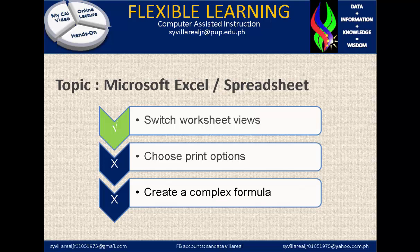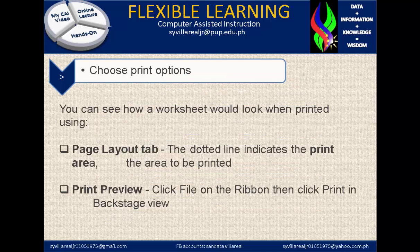Let's go now to our second topic, the Choose Print Option. In choosing a Print Option, you can see how a worksheet would look when printed on bond paper, columnar paper, or even on continuous paper. There's what you call a Page Layout tab. The dotted line indicates the print area — the area to be printed. Those dotted lines in Microsoft Excel or any spreadsheet indicate the printable area.